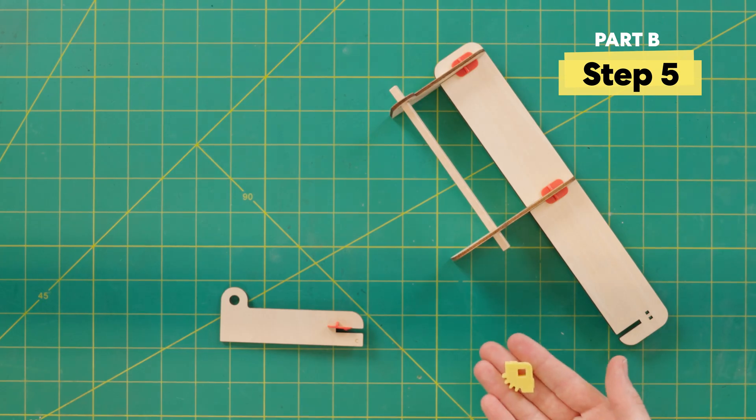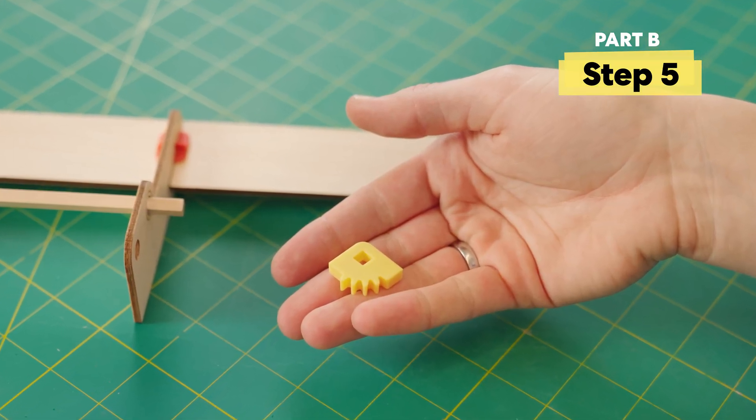Then we're going to make a little gear sandwich. Make sure the gear teeth are pointing to the left and down, just like this.